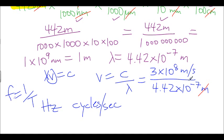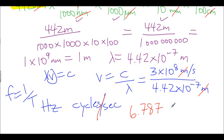We have meters in the numerator and meters in the denominator — they divide out. But our units are not just seconds; our units are going to be cycles per second. These numbers represent how many cycles this wavelength will pass a given point every single second in time. We take our calculator: 3 times 10 to the power of 8 divided by 4.42 times 10 to the negative 7, and we get 6.787 times 10 to the power of 14 cycles per second.